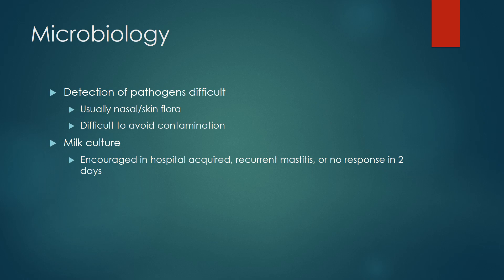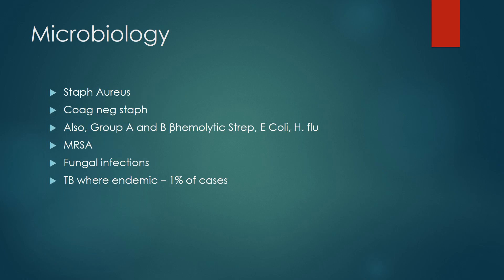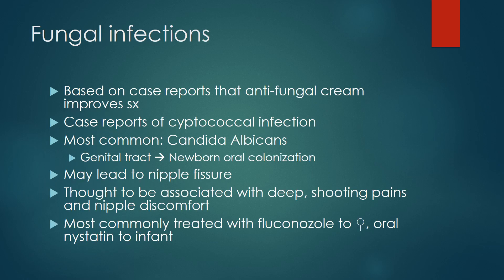Microbiology shows normal skin flora contamination. Recurrent mastitis may require multiple cultures. Pathogens include Staphylococcus aureus, coagulase-negative Staphylococcus, group A and B beta-hemolytic Streptococcus, E. coli, Haemophilus influenzae, MRSA, fungal infection, and TB variants. Fungal infections are common and the most common is Candida albicans.